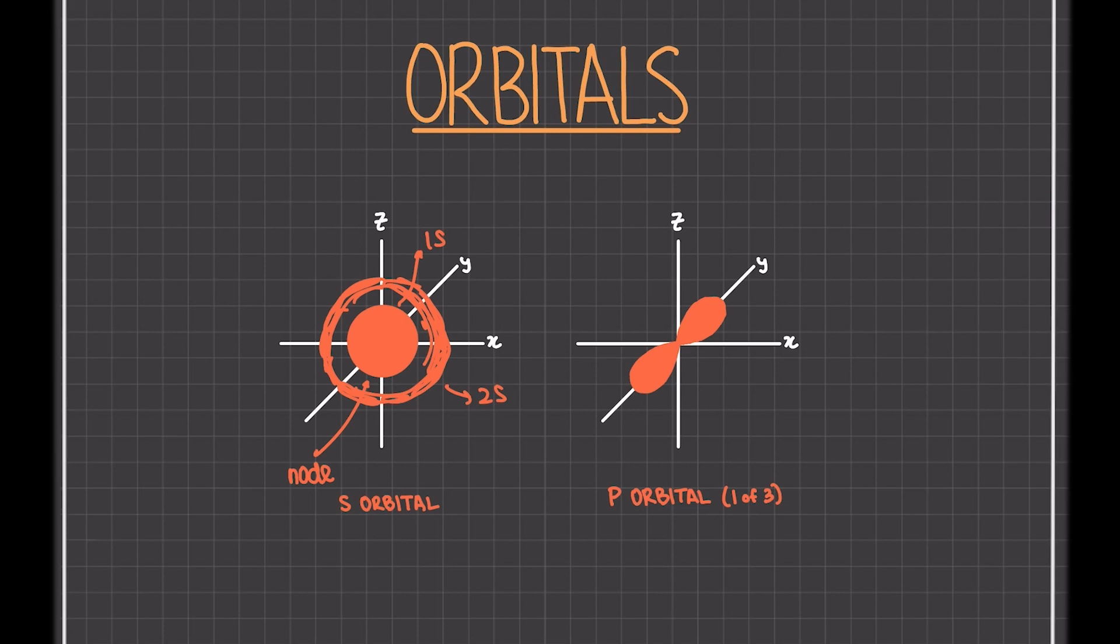The p orbitals are visualized on the right, and they have three orientations based on the three states for p orbitals. Here the y-axis orientation is shown, but there are two other orientations, which can be on the z-axis or on the x-axis.